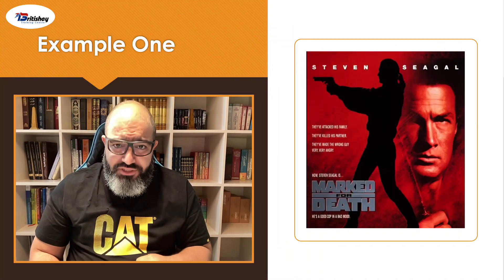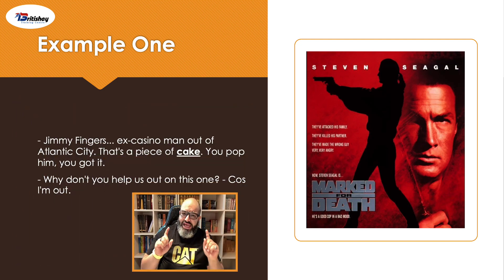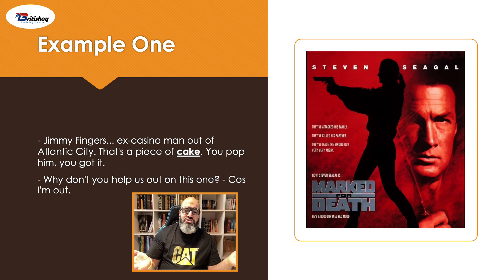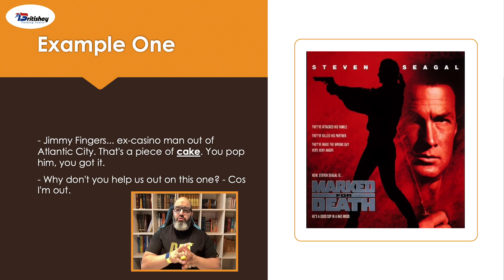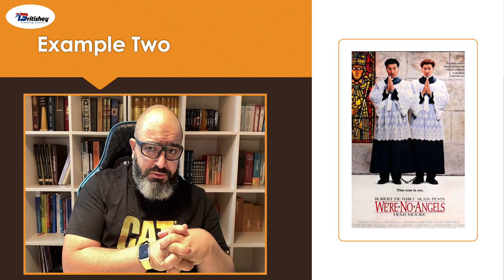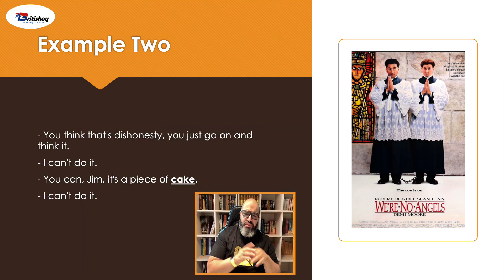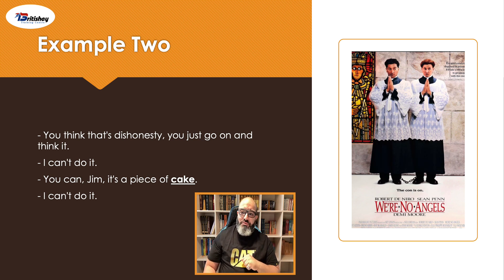Now "piece of cake" in films. From Marked for Death: "Jimmy Fingers, ex-casino man out of Atlantic City — that's a piece of cake, you're popping, you got it." Meaning it's easy. From We're No Angels: "You think that's dishonesty? I can do it — it's a piece of cake," meaning easy.